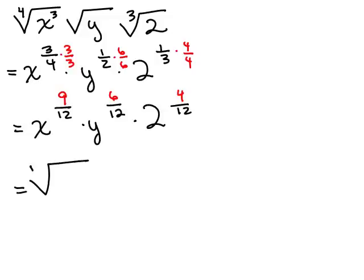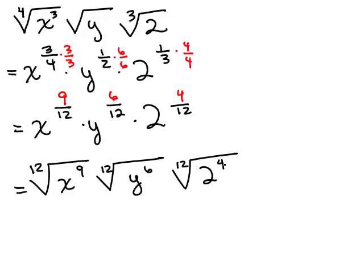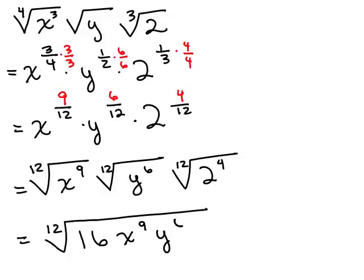I'm going to have the 12th root of x to the 9th, the 12th root of y to the 6th, and the 12th root of 2 to the 4th. But since they're all 12th roots, I could write it as one big radical, the 12th root. Let's put the coefficient first. 2 to the 4th, that means 2 times 2 times 2 times 2. That's going to be 16, times x to the 9th, times y to the 6th, and there you go.